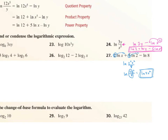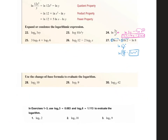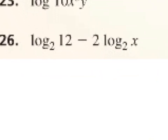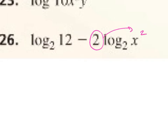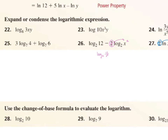Any other questions from this page? Let's look at 26. What should we do first to condense it? Move the 2 to the exponent. And then since it's subtraction, what can we do? Divide. So we have log of 2. What goes on top? 12. And what goes on the bottom? X squared. So all the way in the bottom of the 3.